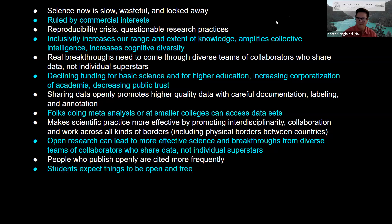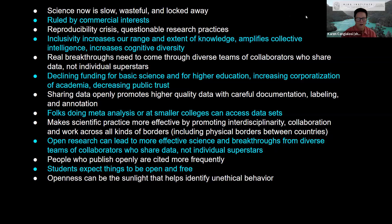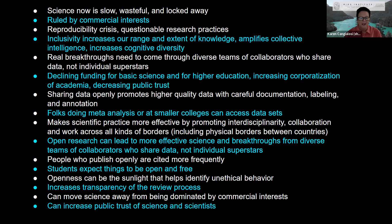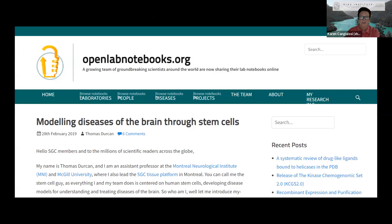Open science should in theory make scientific practice more effective by promoting interdisciplinarity and collaboration across physical and other borders. People who publish openly are cited more frequently, so there's individual benefit too. Students expect things to be open and free. Openness can be the sunlight that helps identify unethical behavior, increases transparency in the review process, and moves science away from being dominated by commercial interests. Increased public trust in science and scientists is also a goal. Open lab notebooks are one example where people share their data and research process publicly.